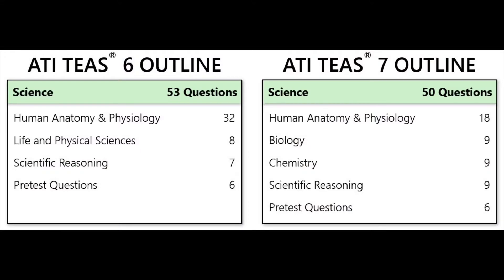Moving on to the science section, and here is honestly where the majority of the changes are taking place. On the science section of the TEAS 6 exam, there were 53 questions with a time limit of 63 minutes. For the TEAS 7 exam, they have slightly lowered both the number of questions and the time limit, so now you will have 50 questions and 60 minutes to complete those questions.